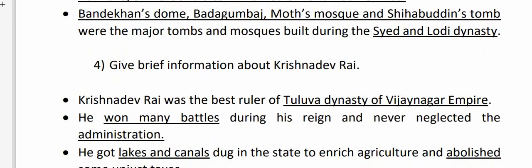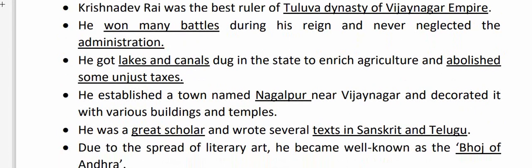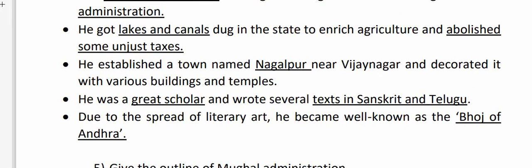Next question: Give brief information about Krishnadev Rai. Krishnadev Rai was the best ruler of the Tuluva dynasty of the Vijayanagara Empire. He won many battles during his reign and never neglected the administration. He got lakes and canals dug to enrich agriculture and abolished some unjust taxes. He established a town named Nagalapur near Vijayanagara and decorated it with buildings and temples. He was a great scholar who wrote several texts in Sanskrit and Telugu and became well known as the Bhoj of Andhra.